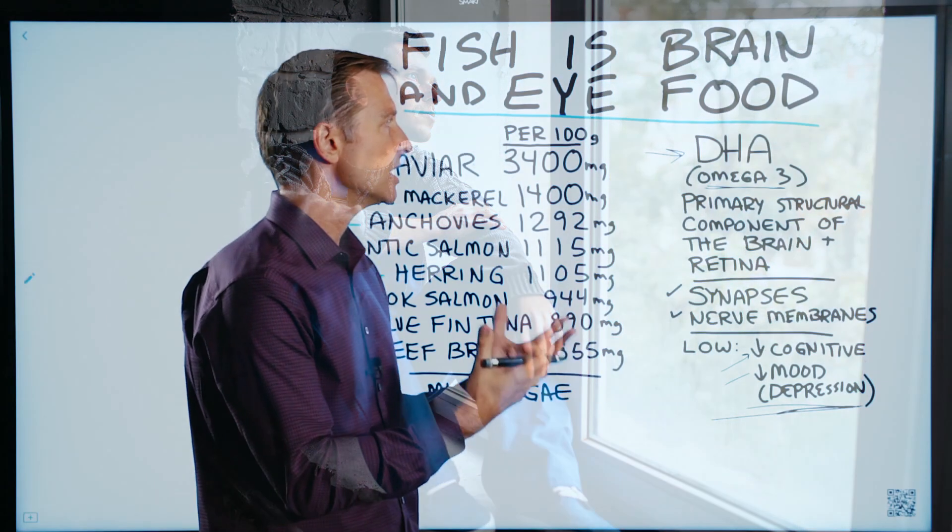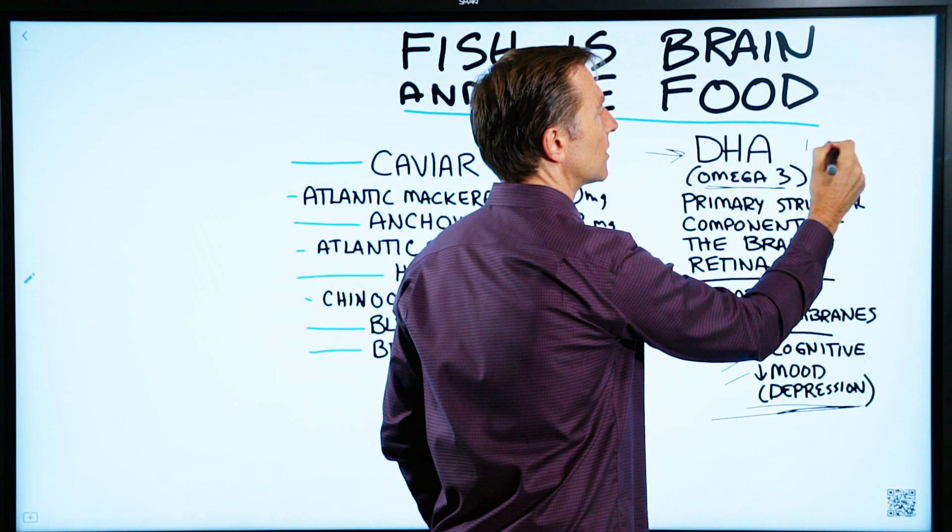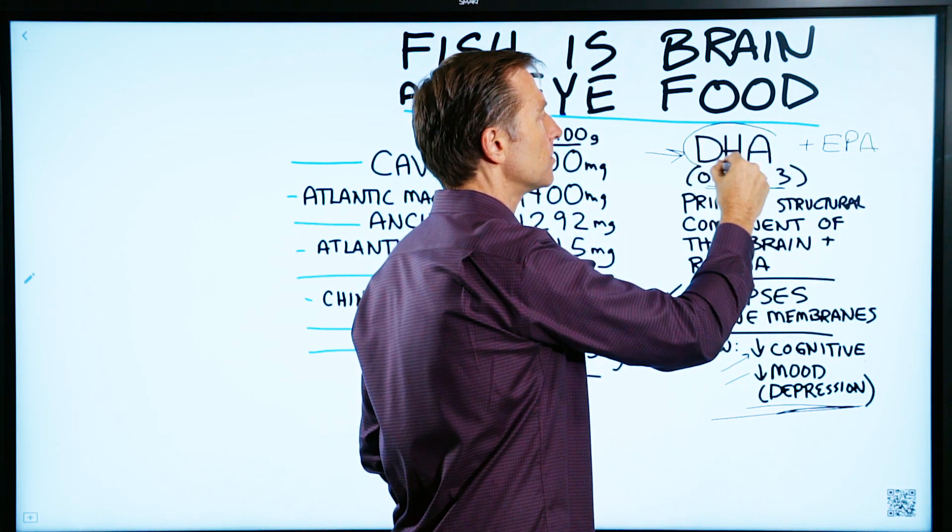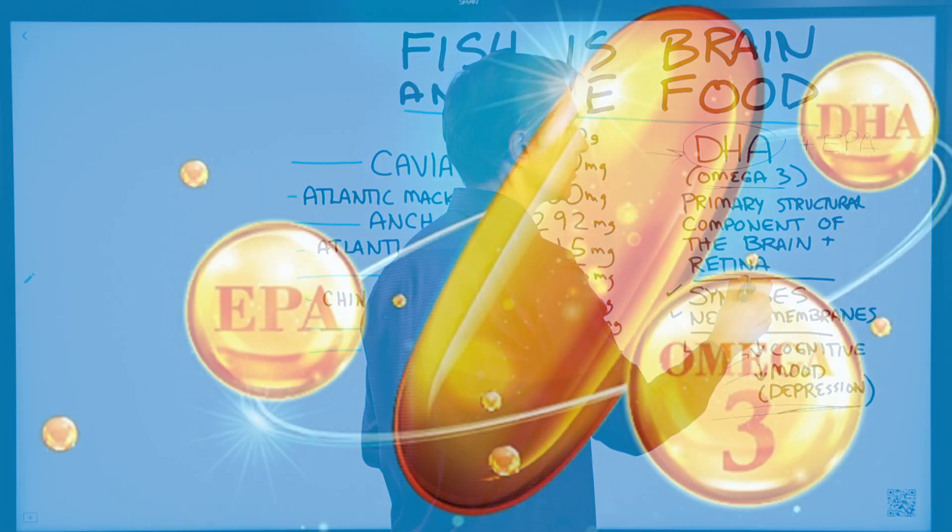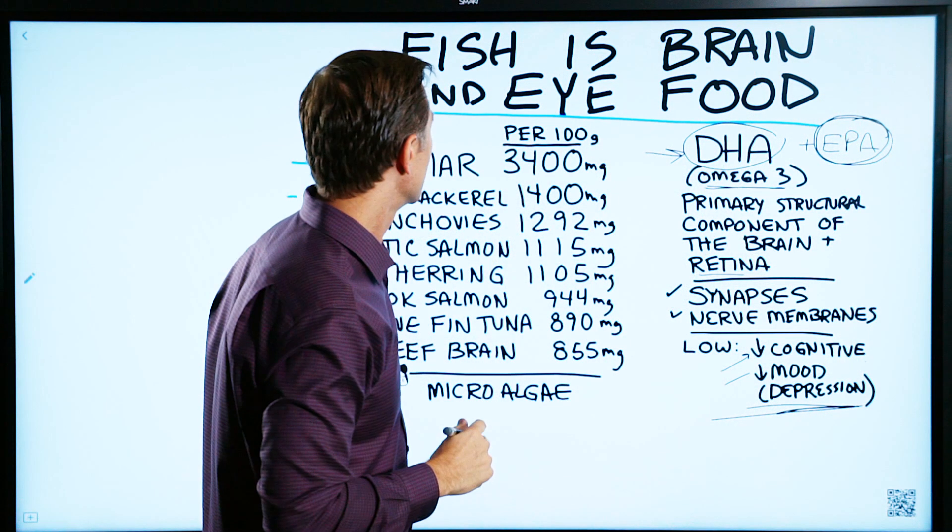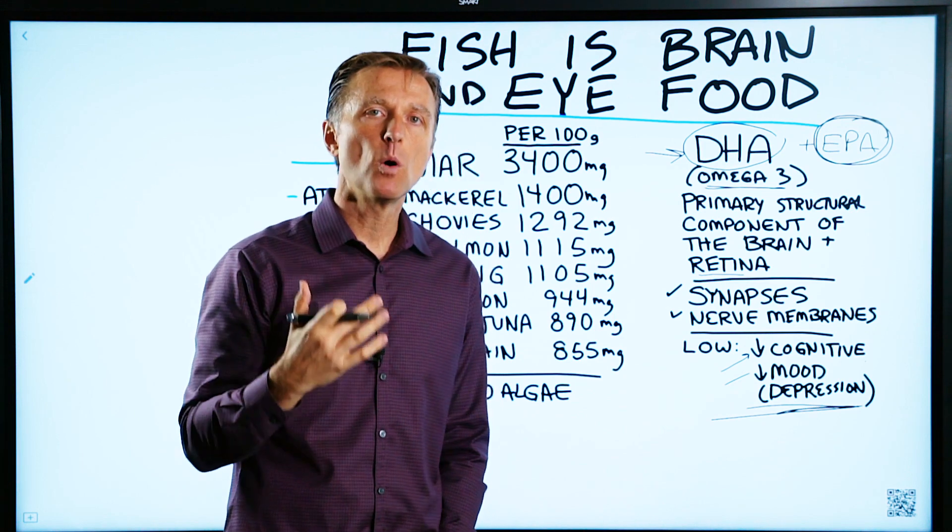Anytime you see DHA, you're also going to see the other fat called EPA. DHA is more for the structural part of the brain and the retina, which is an extension of the brain. EPA works more on the function part. So what foods have the most DHA?